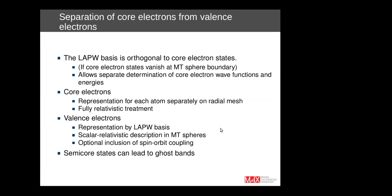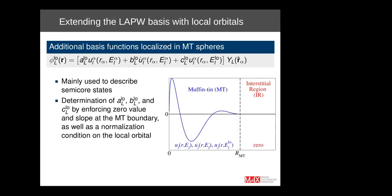This orthogonality between the LAPW basis and core electron states only holds when the states vanish at the muffin tin sphere boundary. But if we have semi-core states — energetically high-lying core states — these states may extend beyond the muffin tin sphere boundaries. This can lead to so-called ghost bands, and I will show you an example for this later.